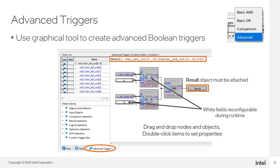Let's start with advanced triggers. With an advanced trigger, you can create more complicated logic expressions for trigger conditions, giving you more control over the trigger's definition. You select to create an advanced trigger using the trigger type list at the top of any trigger condition column in the node list. When a column is set to use an advanced trigger, a new tab is added to the SignalTap window. Switching to the new Advanced Trigger tab opens the Advanced Trigger Condition Editor, a simple graphical interface for defining an advanced trigger expression. The advanced trigger occurs when the expression defined at the top of the editor evaluates to true.